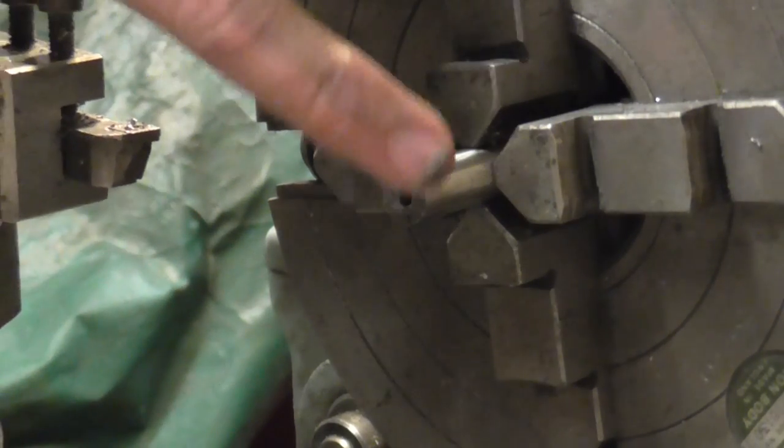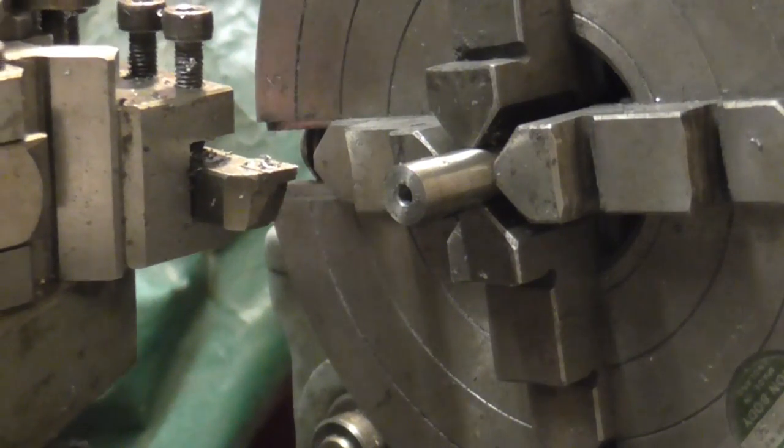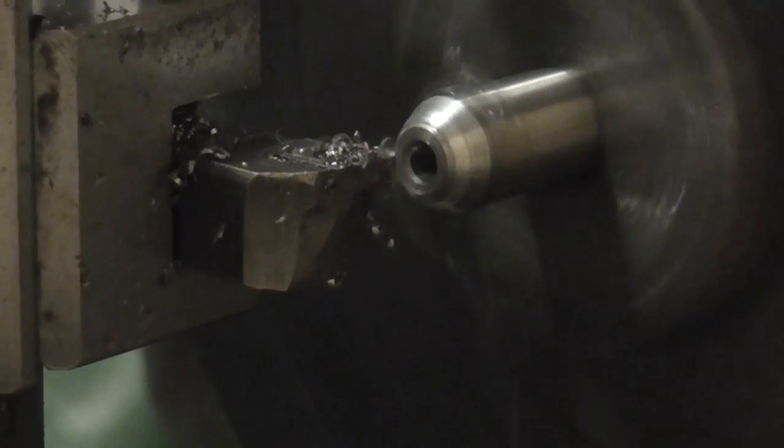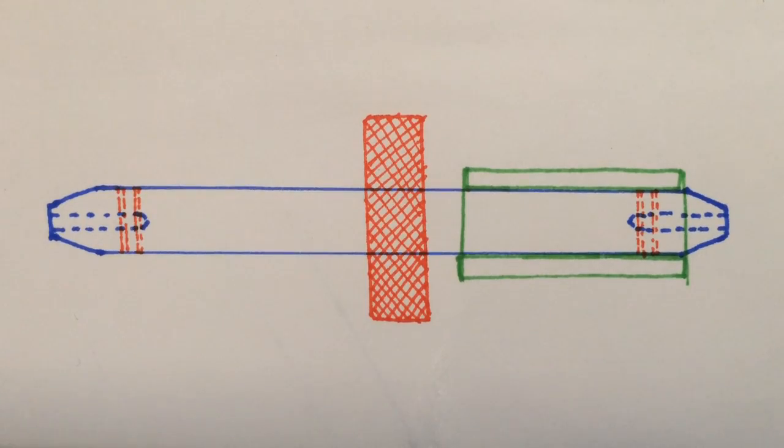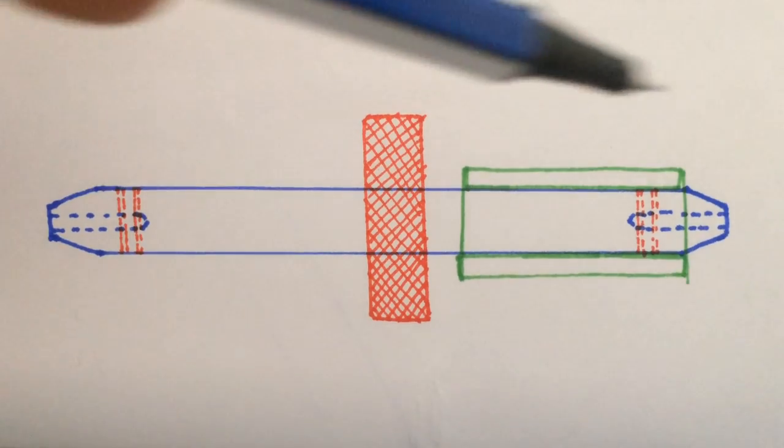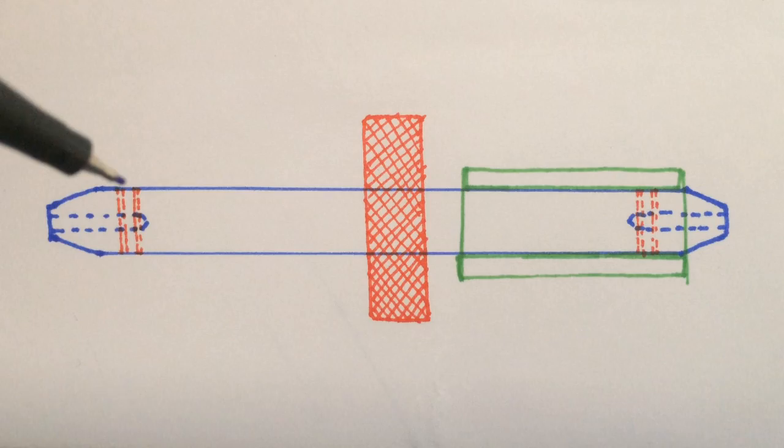Last up I'm just going to turn a little chamfer on the front of this diameter. Here's your first view of the master plan. So far I've done the drilling and turning in one end and I'm going to do the same to the other end. Then I've got a couple of cross holes to put in.